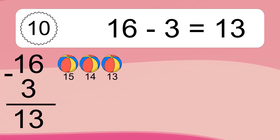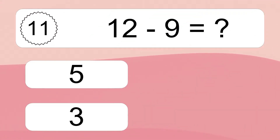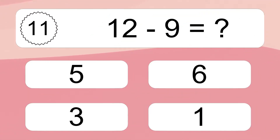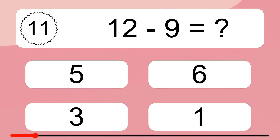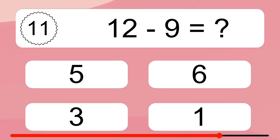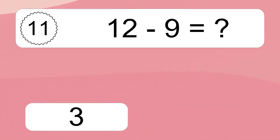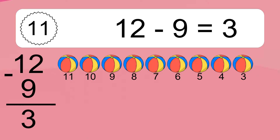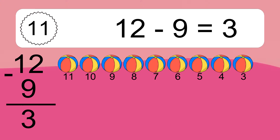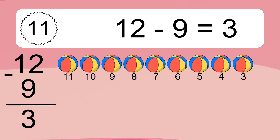12 minus 9 equals what? 12 minus 9 equals 3. Let's count it. 11, 10, 9, 8, 7, 6, 5, 4, 3.